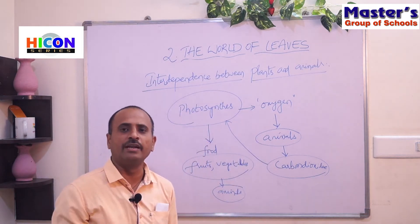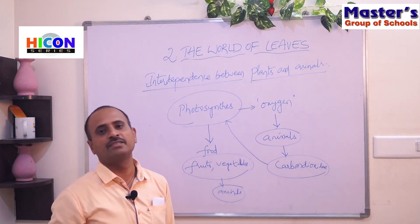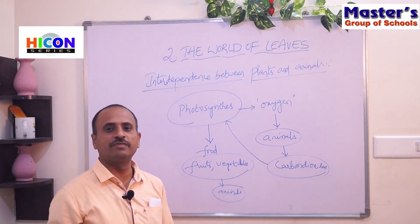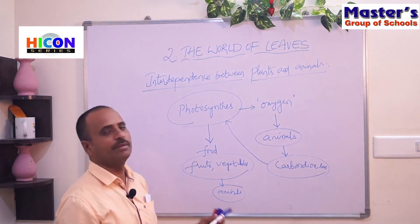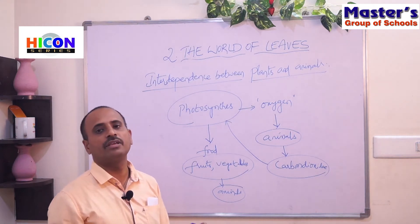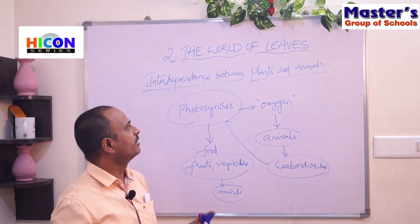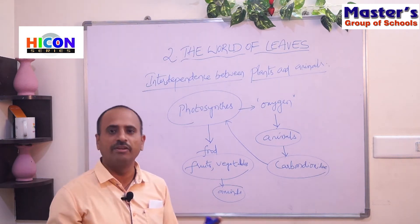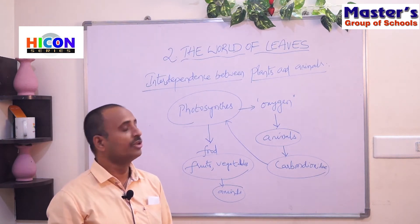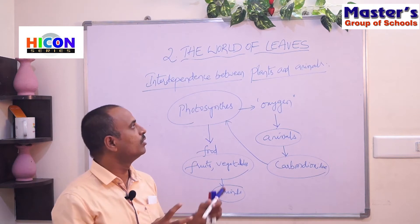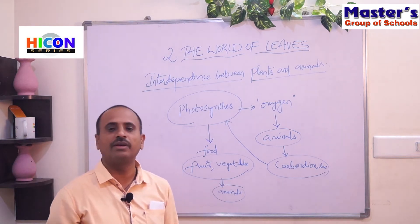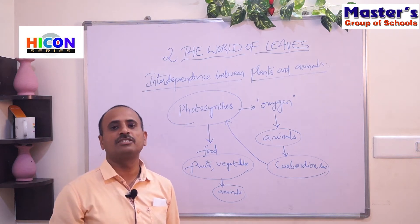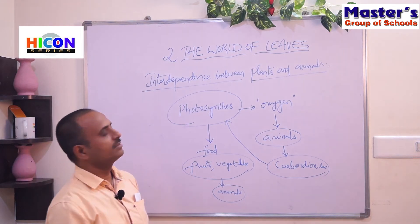Without animals there are no plants, and without plants there are no animals. Both plants and animals depend upon each other, so there should be a balance between plants and animals in the environment. We must keep both plants and animals in our environment — only then will a natural balance occur in the surroundings.